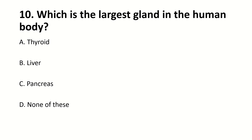Which is the largest gland in the human body? The right answer is B — Liver.